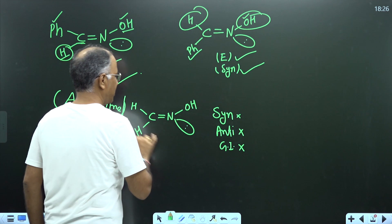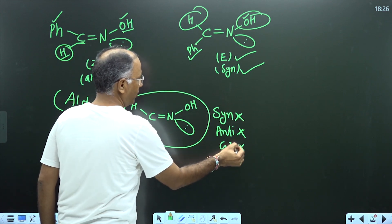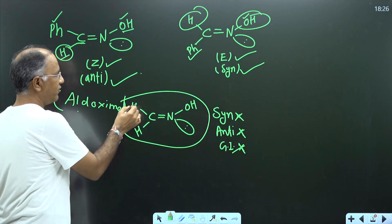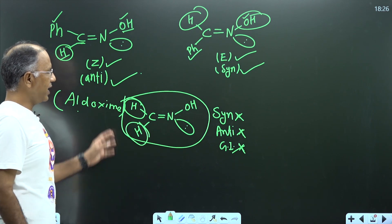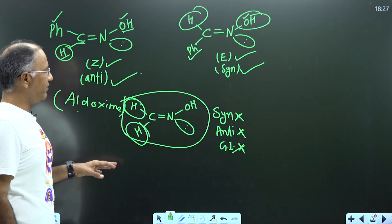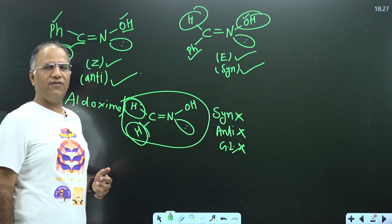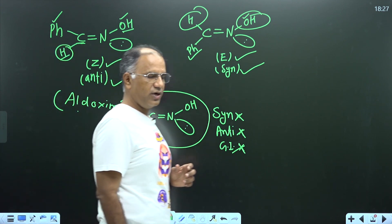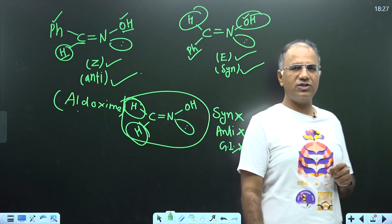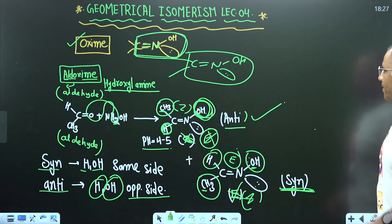This case is neither syn nor anti, nor can we assign E/Z, because there are two like groups on the same carbon. Due to like groups on the same carbon we cannot say it is syn or anti. Syn/anti is applicable only when the molecule shows geometrical isomerism. If it is showing geometrical isomerism, then we can say syn or anti.